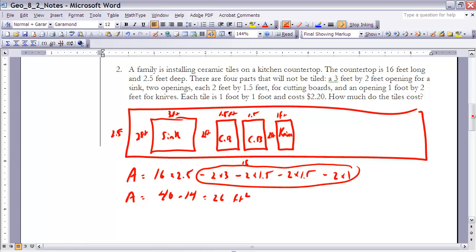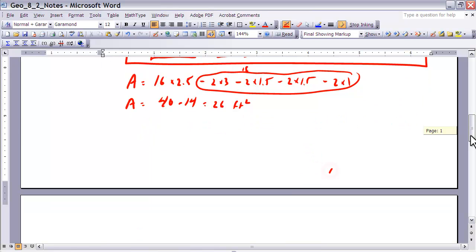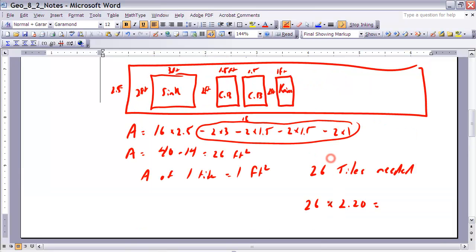Now since the tiles are one foot by one foot, the area of one tile is equal to one square foot. Therefore, there's going to be 26 tiles needed. And to get the total cost, I'm going to take that times $2.20. So I'm going to take 26 times $2.20, and if I do that, I get $57.20. Therefore, the tile is going to cost $57.20.